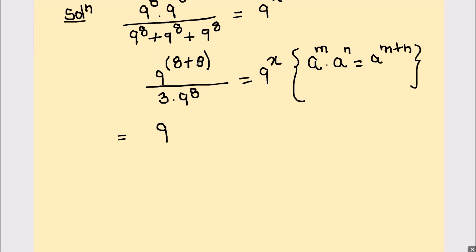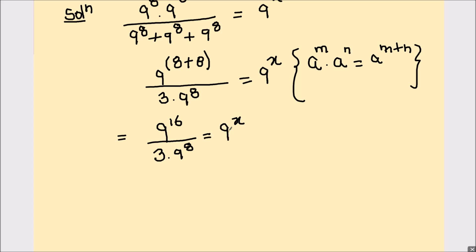The next step is to add the exponents. So that's 9 raised to power 16 divided by 3 times 9 raised to power 8, equals 9 raised to power x.